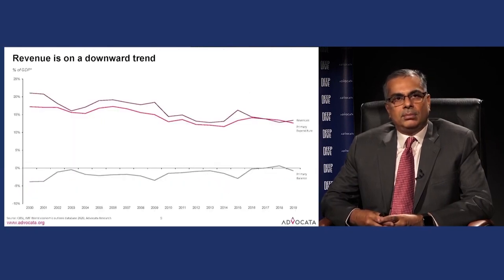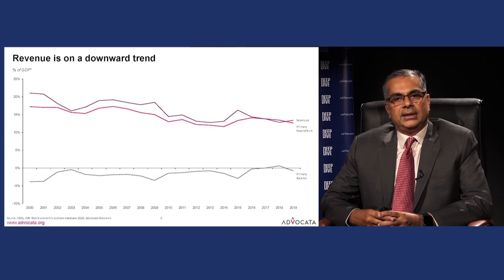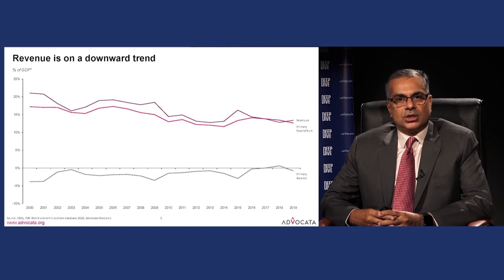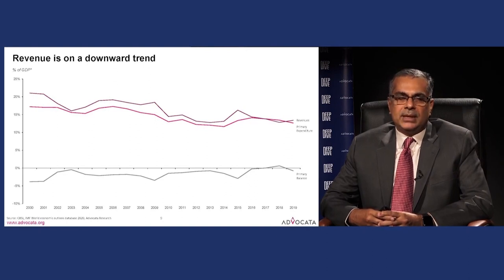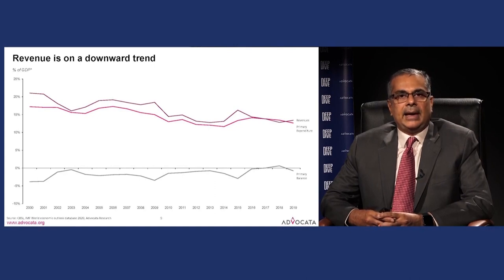The core problem is clearly shown: 20 years ago we were collecting close to 20 percent of GDP in revenue. That has significantly declined to around 13 percent, except for a brief recovery a few years ago. Meanwhile, primary expenditure has remained roughly flat, and this divergence has contributed to the persistent primary deficits.